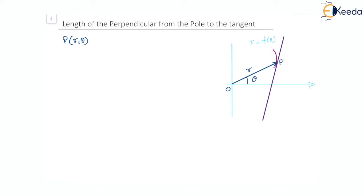We are drawing a tangent to the curve at P, let's say PL. Since we are looking for the perpendicular distance of the tangent from the pole, we draw a perpendicular to this tangent from the pole. This perpendicular meets the tangent at point N, making a 90-degree angle. The angle between the tangent and the radius vector is phi.